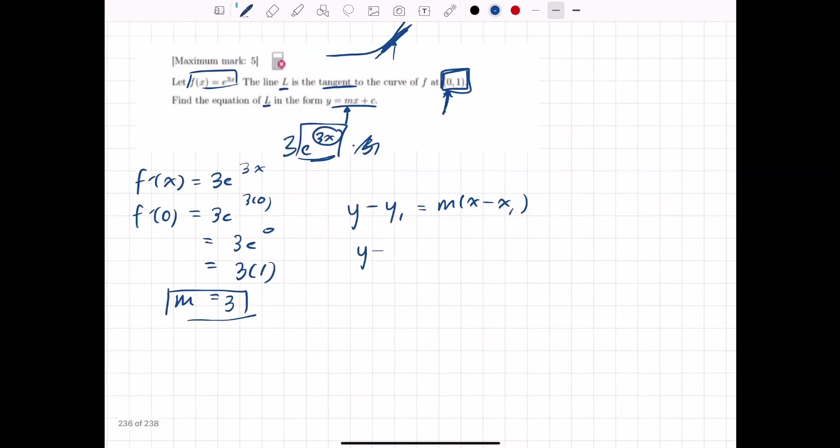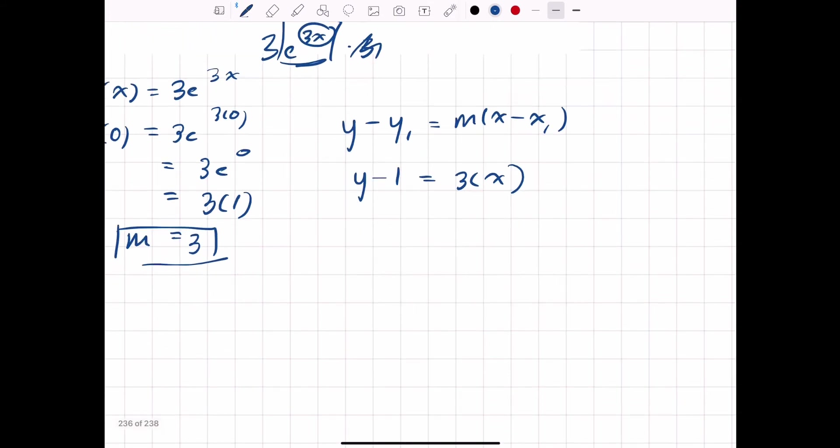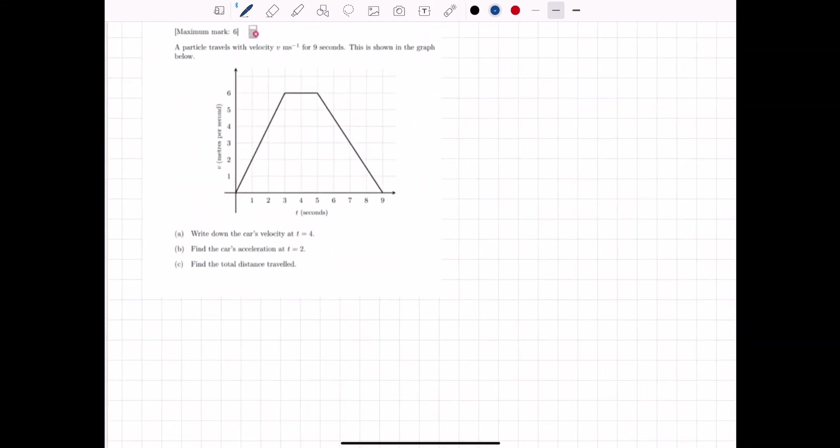So let's do that. y minus y1, well, y1 is just 1, then m is 3x minus 0, but we don't need to write that. 0 is exactly that. Then y is equal to 3x plus 1, and there you go. So that's the equation of the tangent. So let's move on to question 3.